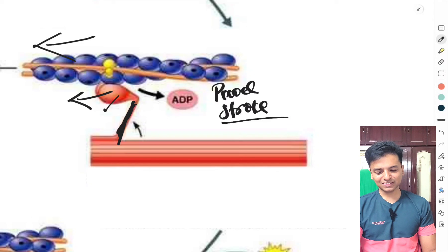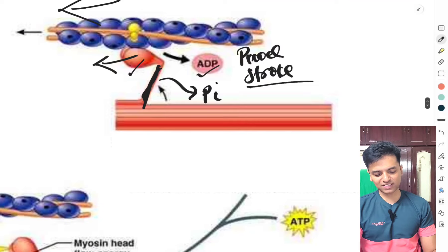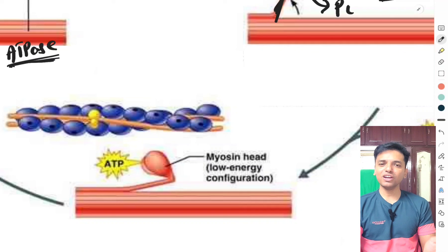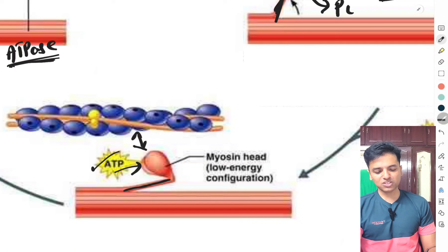After the power stroke, ADP and the high-energy phosphate are released, completing the hydrolysis of ATP. Now the myosin head is free of ATP. A fresh ATP then comes and binds to the head of the myosin. The binding of this fresh ATP does two things: first, it detaches the head of the cross bridge from the actin; second, it brings the cross bridge back to the low energy configuration.